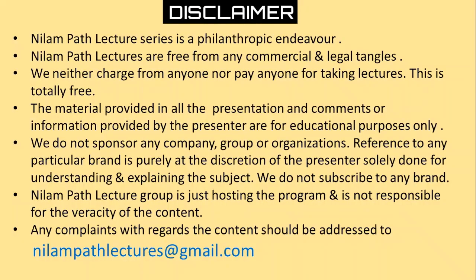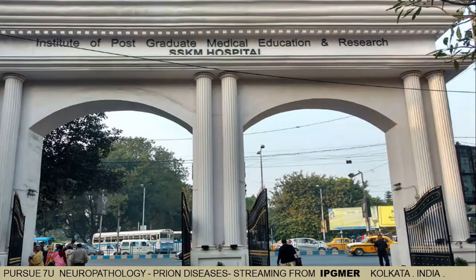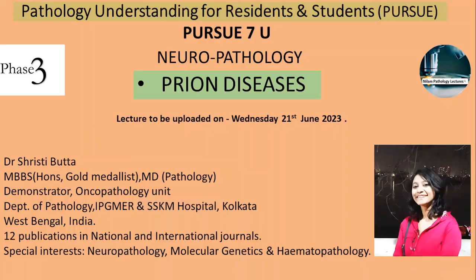We are in phase three and today we have Pursue 7U which is neuropathology — specifically prion disease — streaming from IPGMR Kolkata. To talk on that we have Dr. Srishti Bhutta. She is an MBBS honors gold medalist and MD in Pathology. She is a demonstrator in the Oncopathology unit at the Department of Pathology, IPGMR and SSKM Hospital Kolkata, West Bengal. She has 12 publications in national and international journals, with special interests in neuropathology, molecular genetics, and hematopathology.